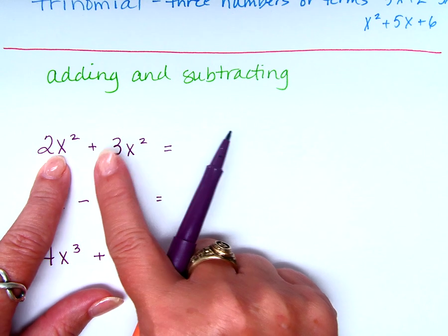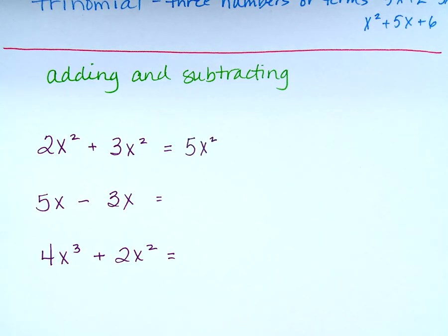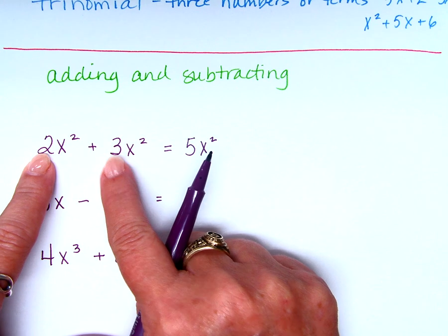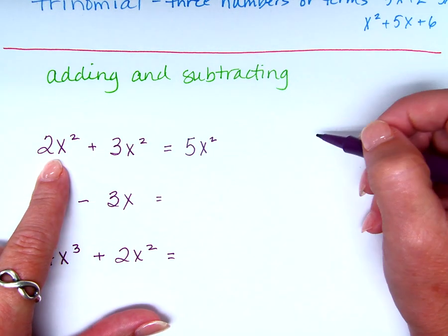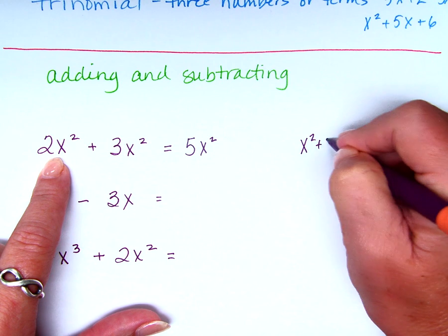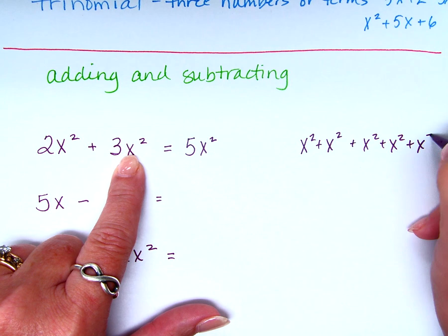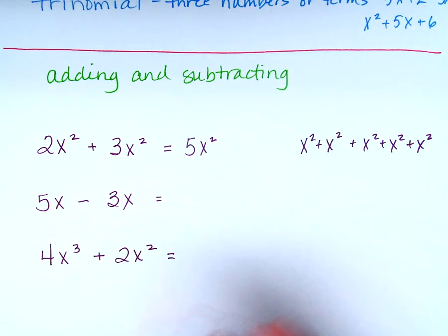If I have 2x squared plus 3x squared, what does that end up being? 5x squared. The most popular wrong answer is 5x to the fourth. When we're adding and subtracting, we only mess with the coefficients. 2 plus 3 is 5, so I have 5x squared. If I have 2x squared and add 3 more x squared, how many total x squareds? 5x squared. I don't mess with the exponent, just the coefficients. What does coefficient mean? The number in the front.